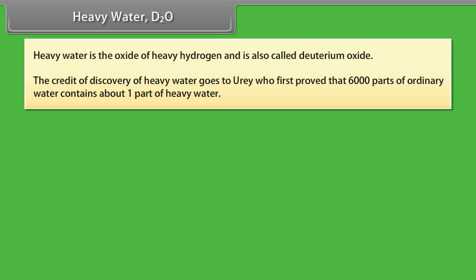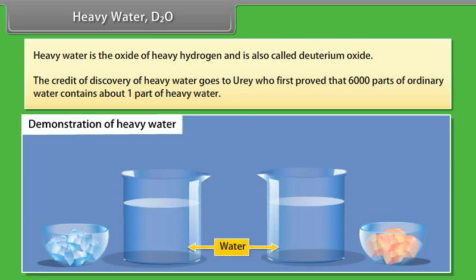Demonstration of heavy water: Firstly, take two beakers filled with water. Drop an ice cube which is blue in color in the first beaker and see that ice floats on water. In another beaker, drop another ice cube which is red in color of heavy water D2O. You will see that the ice cube sinks in the water. This is due to the fact that deuterium is heavier isotope than hydrogen and it changes physical and chemical properties of water.